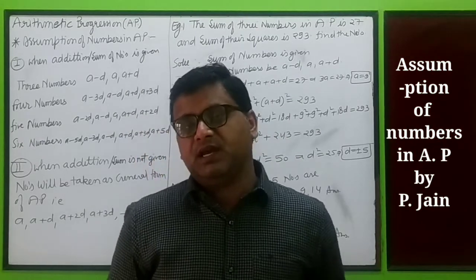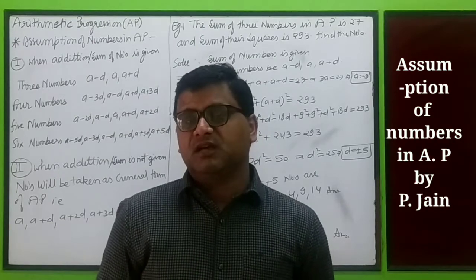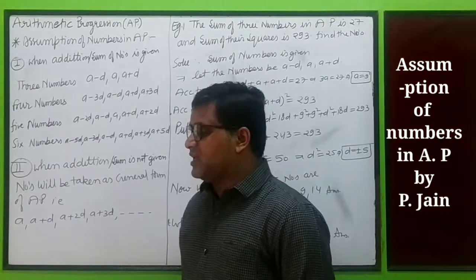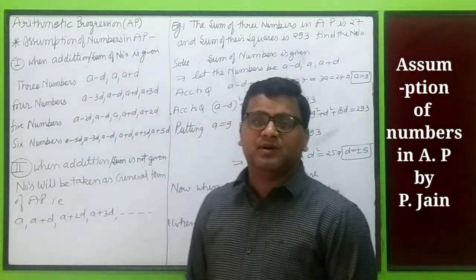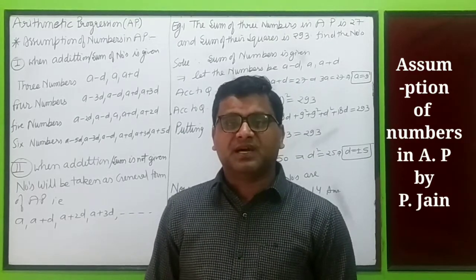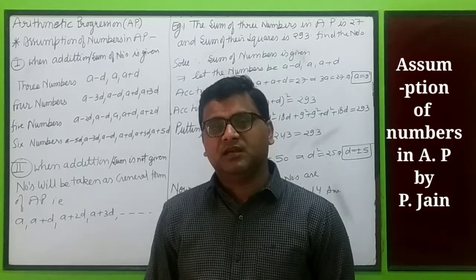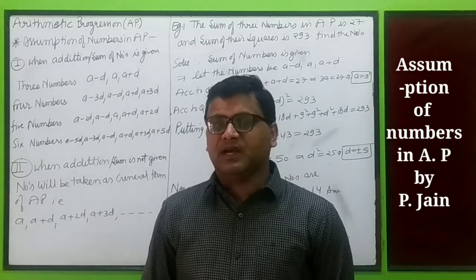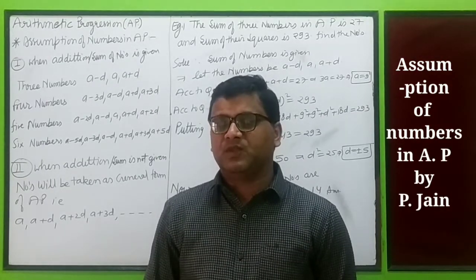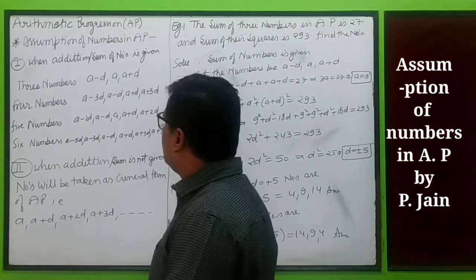When the sum is given, for example if we are given the sum of three numbers, we assume them as a minus d, a, and a plus d, so that when we sum them, d cancels and we get the value of a. The calculation becomes easy. For four numbers we assume a minus 3d, a minus d, a plus d, a plus 3d. For five numbers, the first case has common difference d.